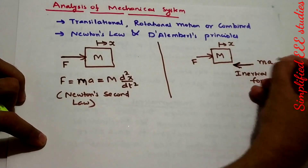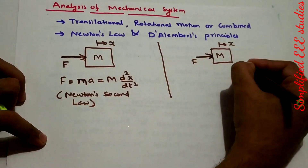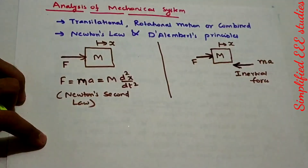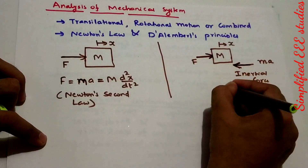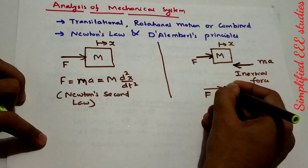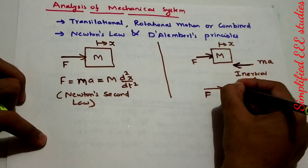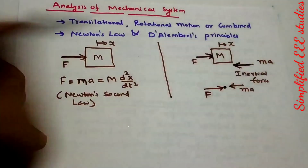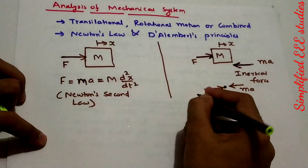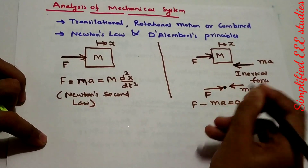That inertial force will be MN. If you apply D'Alembert's principle: one force will be acting in the forward direction and another force will be acting in the reverse direction. If you plot a free body diagram, there will be force F moving on the point, and another force MN acting in the opposite direction. Applying D'Alembert's principle: F minus MN equals zero. This principle is generally known as D'Alembert's principle.